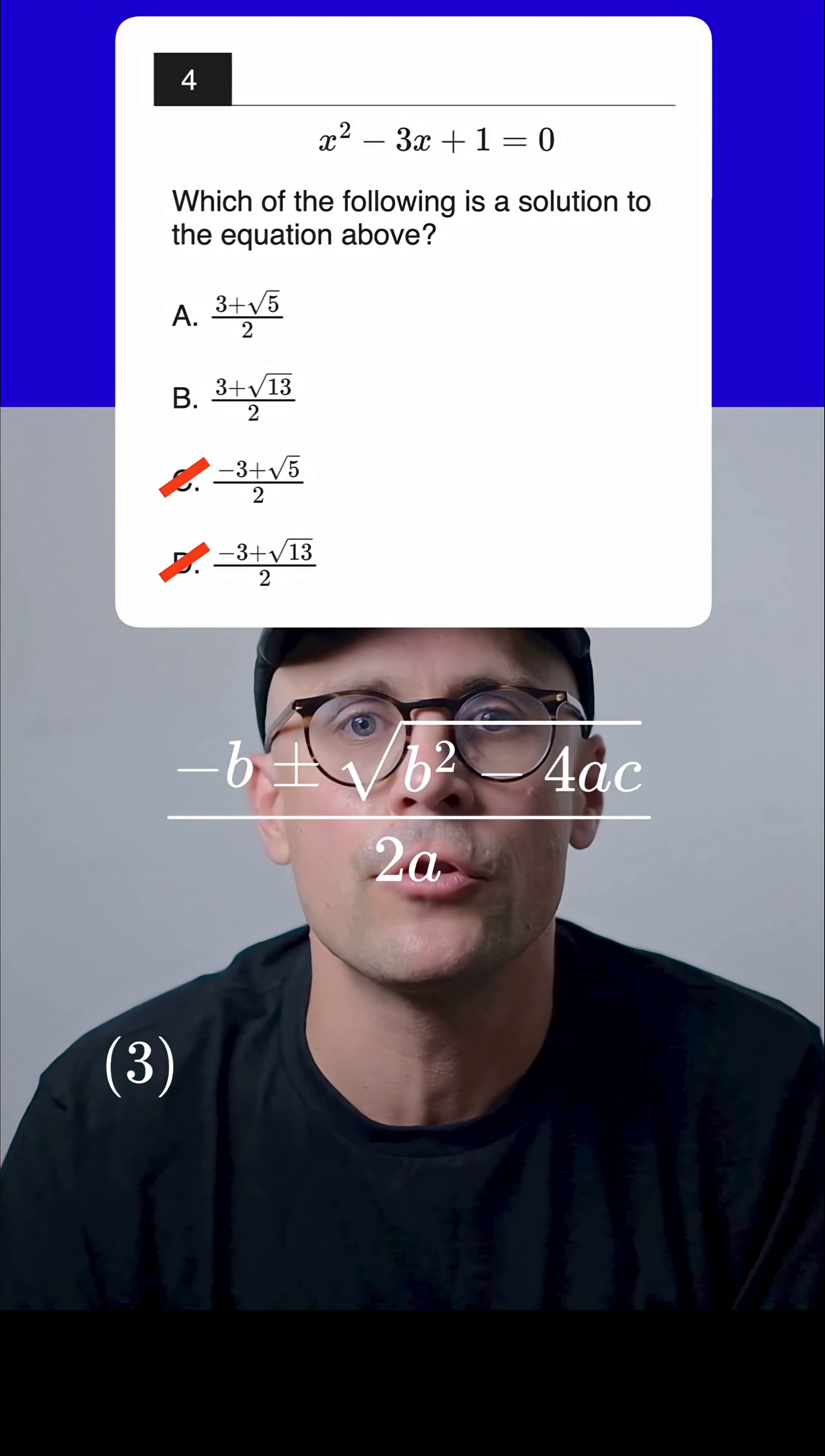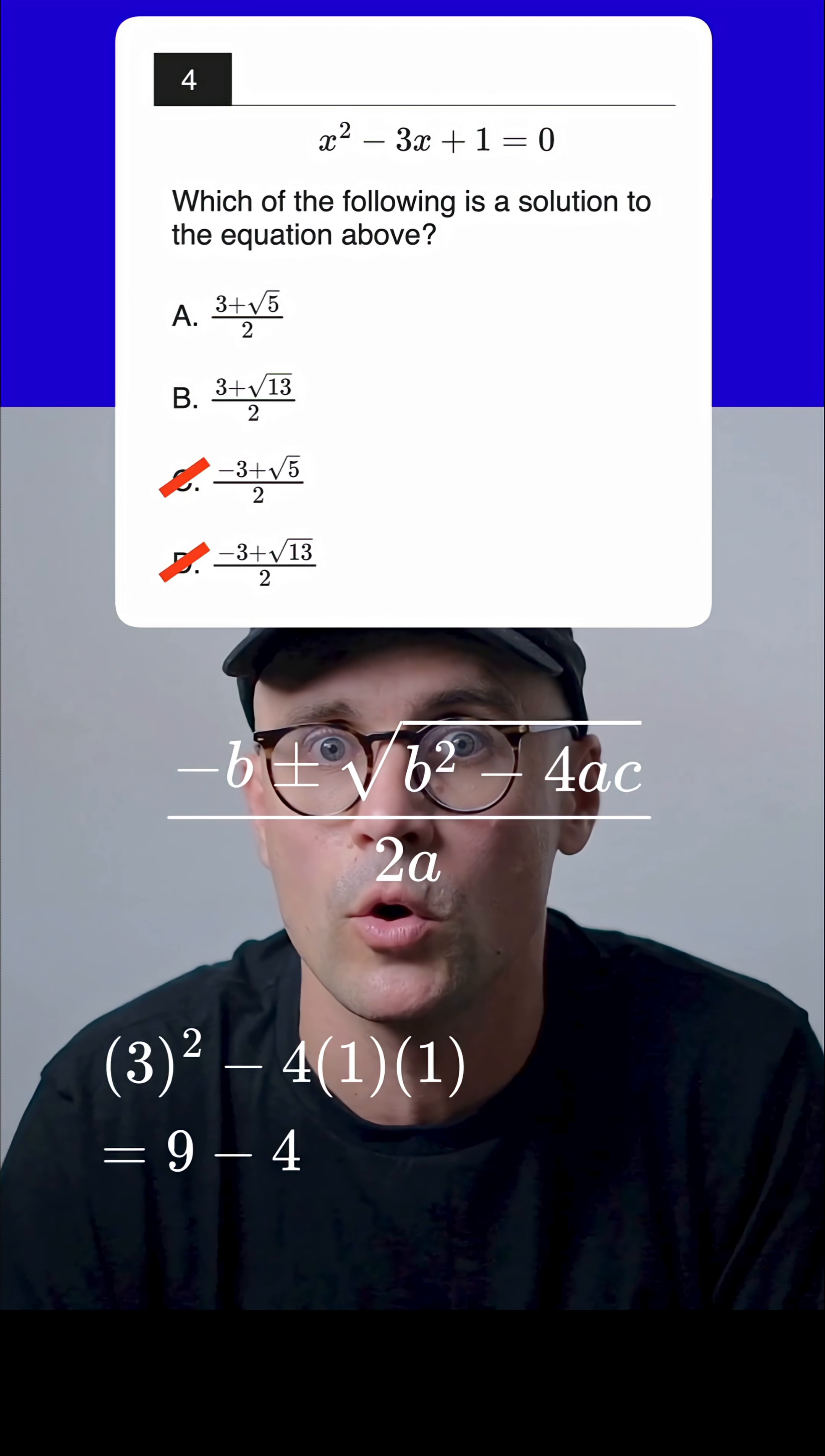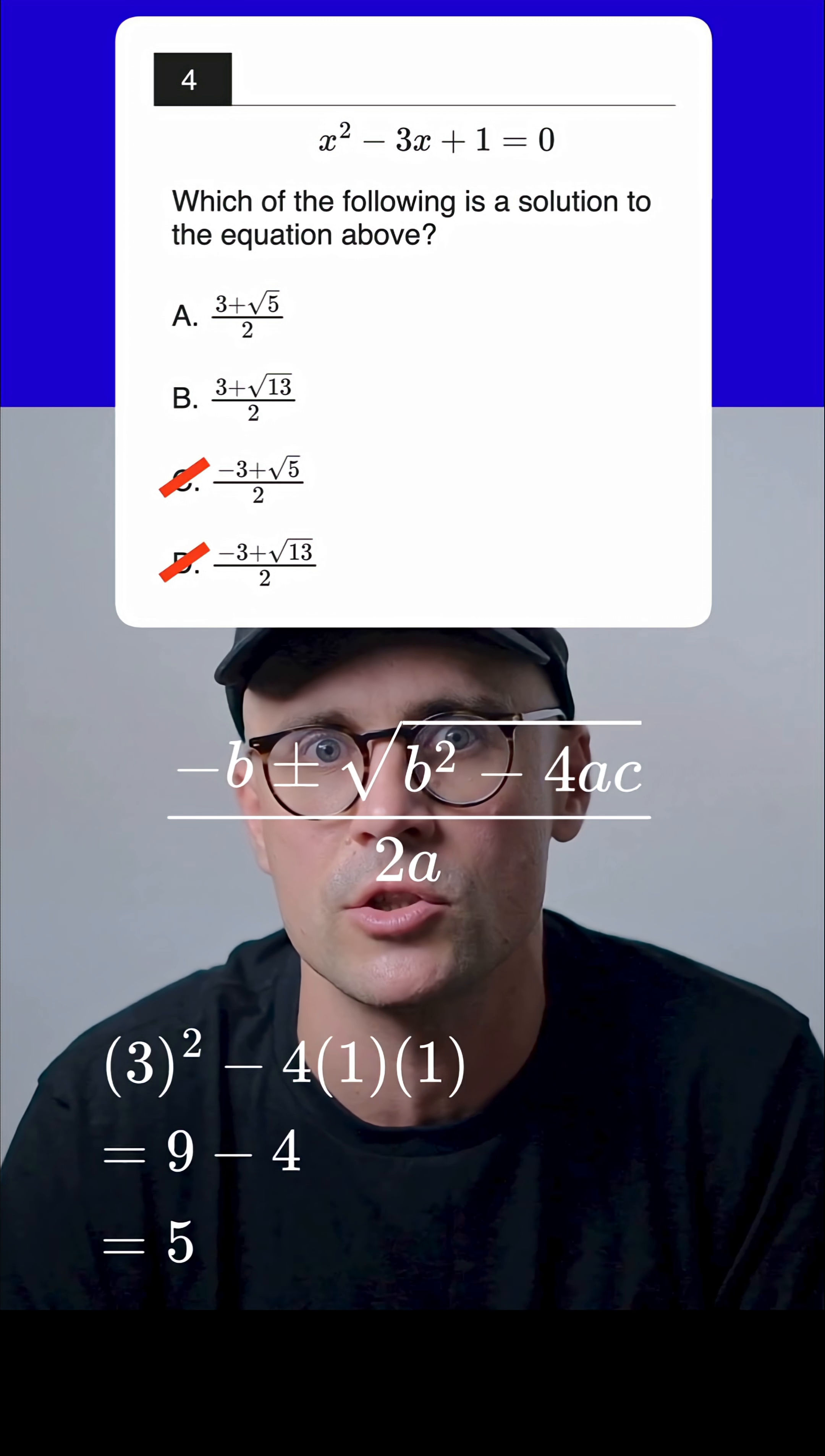Now we just need to calculate 3 squared minus 4 times 1 times 1, which is 9 minus 4, which gives 5, so the answer is just A.